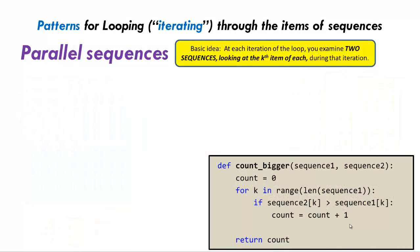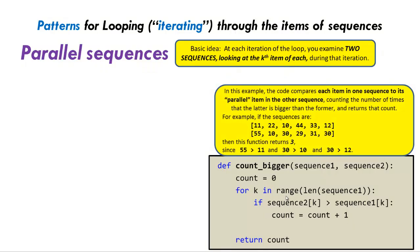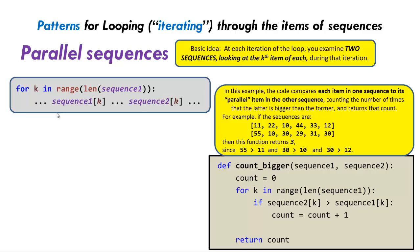Our next pattern is the parallel sequences idea, where at each iteration of the loop you're examining two completely different sequences, looking at the kth item — the same place of each — during that iteration. Here's the pattern: for k in range of length of sequence one, we look at sequence one at the kth item and sequence two at its kth item. So when k is 0 we're looking at sequence one zero and sequence two zero; when k is 1, sequence one one and sequence two one; when k is 2, sequence one two and sequence two two, and so forth. I'm assuming the lengths of the sequences are the same.